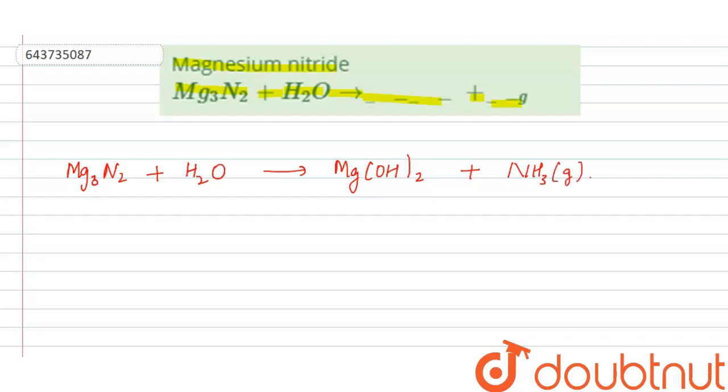To balance this equation, we will put 6 here, 3 here, and 2 here. This is Magnesium Hydroxide.